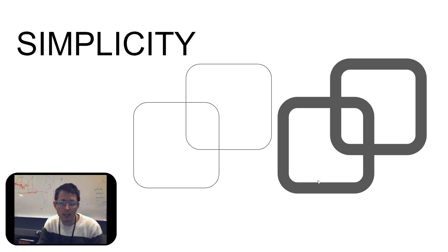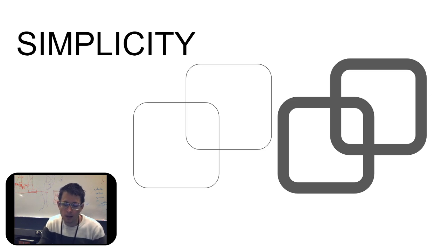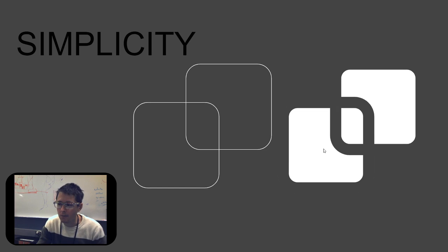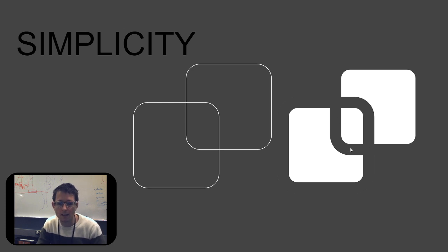We see two rounded squares layered on top of each other. Even when we change the background, we still see two rounded squares. Our mind simplifies this tangent and we understand those shapes.